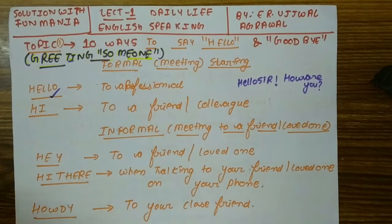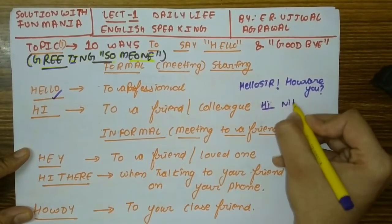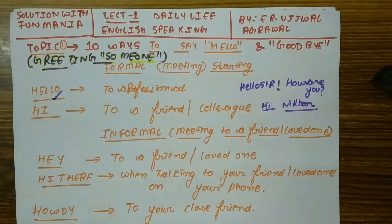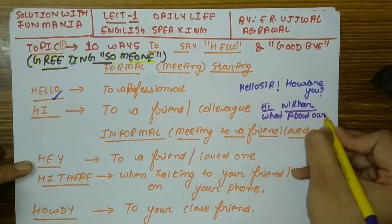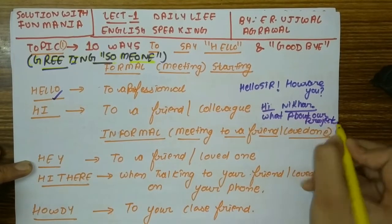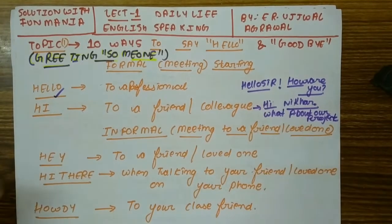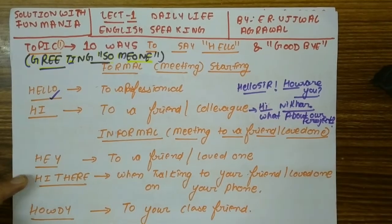Hello sir, how are you? When you are with a friend, you use a professional sentence. When we talk about formal terms — which are formal — you say 'Hello sir, how are you?' And when I am a friend or colleague, I may ask: 'What about our project?'